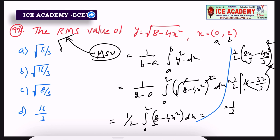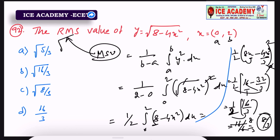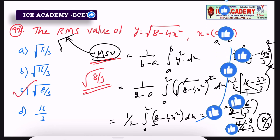Therefore the mean square value is 8/3. Taking the square root, the RMS value is √(8/3). So option number C is the right answer.